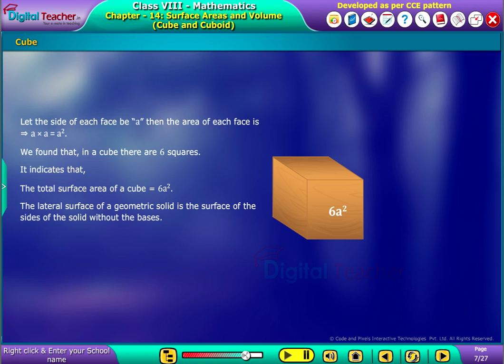The lateral surface of a geometric solid is the surface of the sides of this solid without the bases. Thus, the lateral surface area would be the area of 4 sides. That implies, 4 into A into A equal to 4A square.